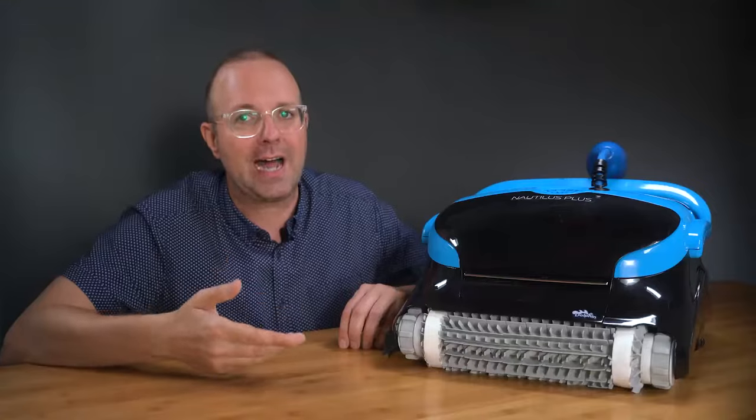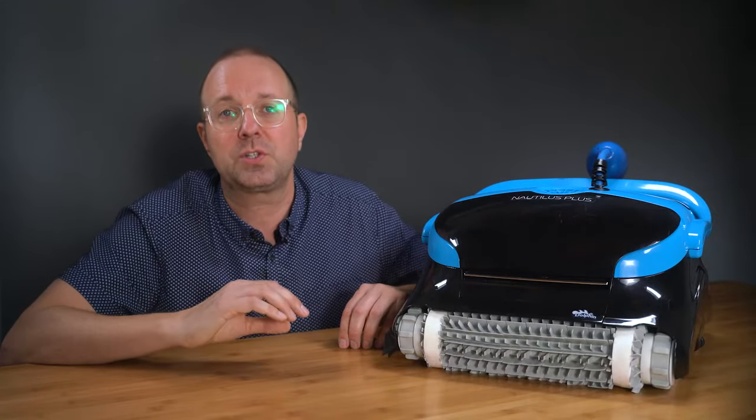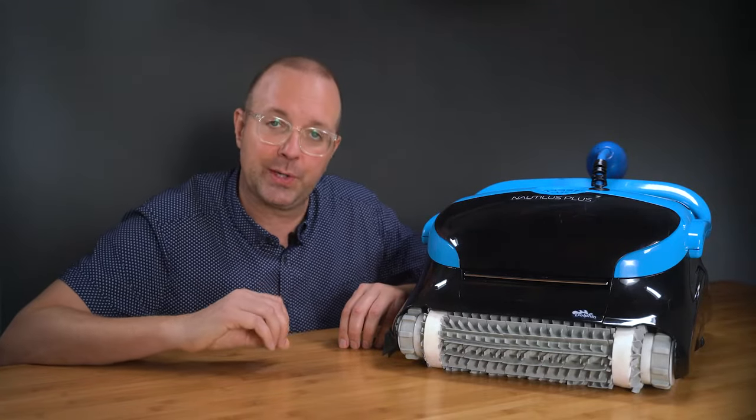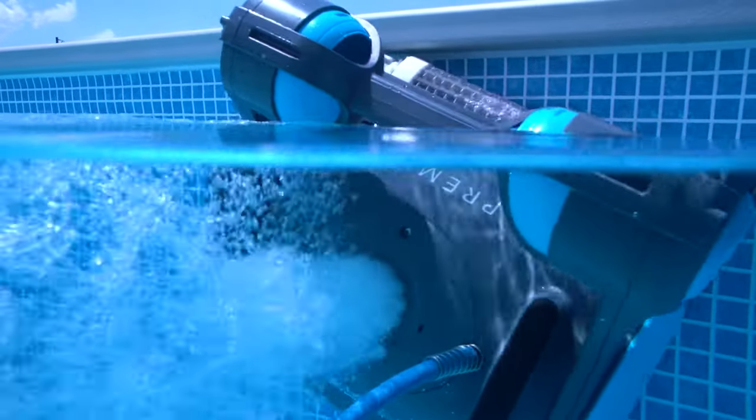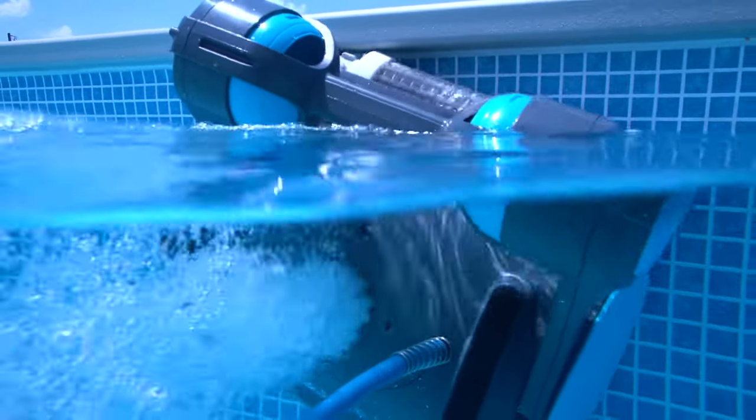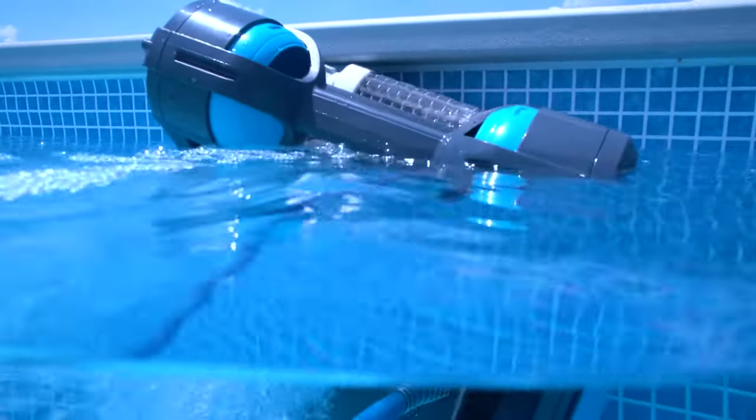This is unfortunate because tile and waterline cleaning is one of the coolest features you'll find on a robotic pool cleaner. Watch this Dolphin Premier scrub the waterline. The way it sticks to the tile line and flies along is just amazing.